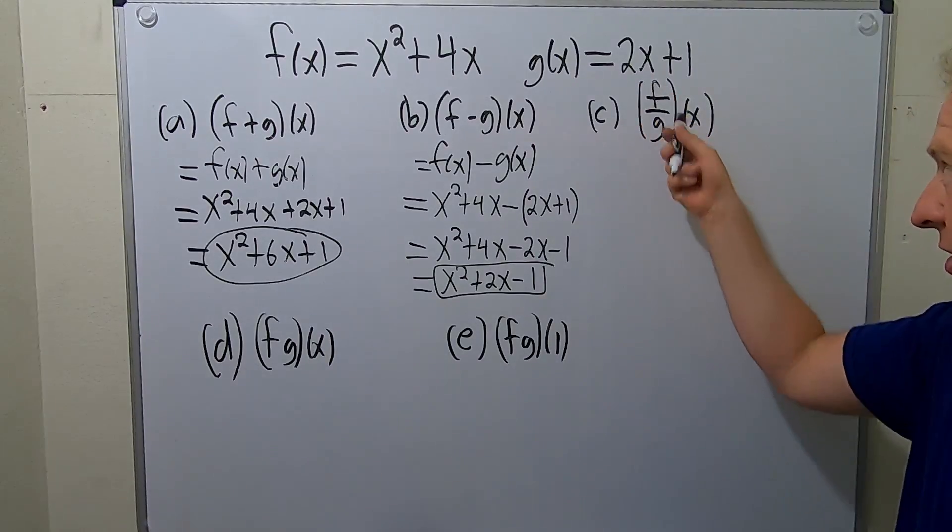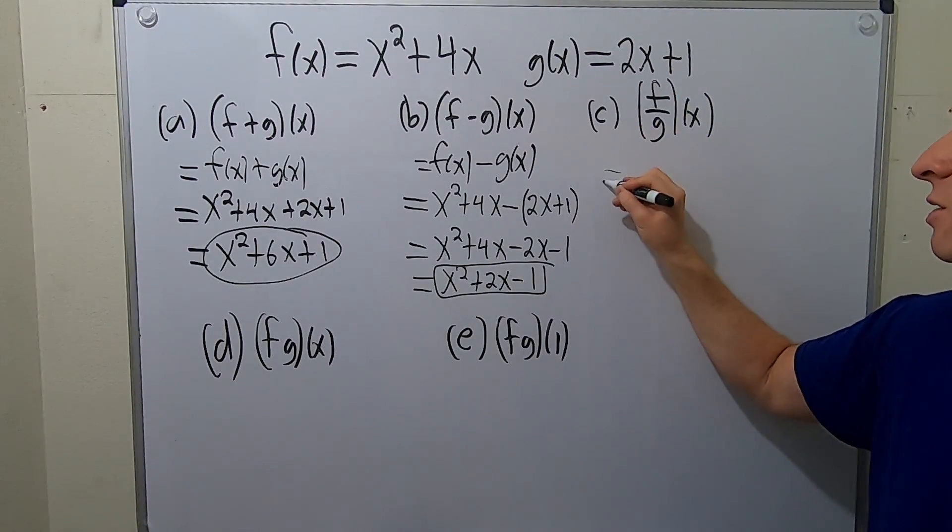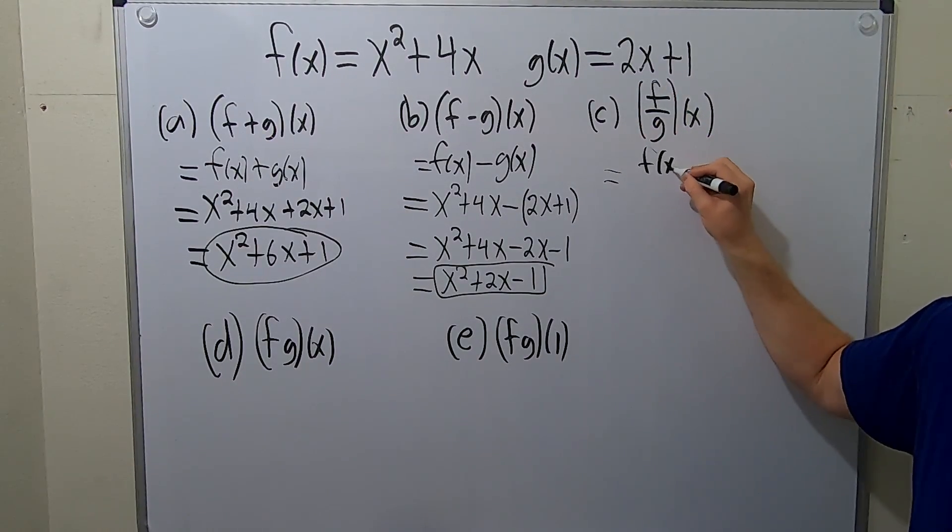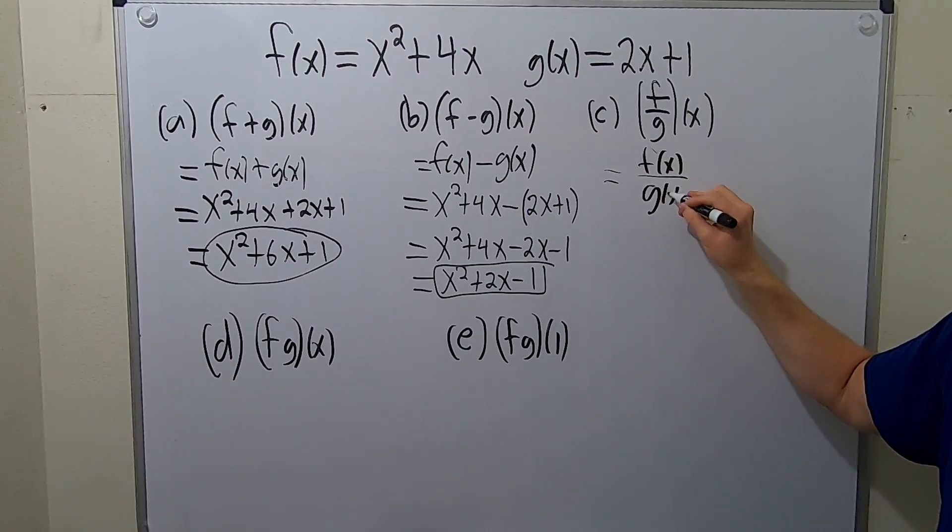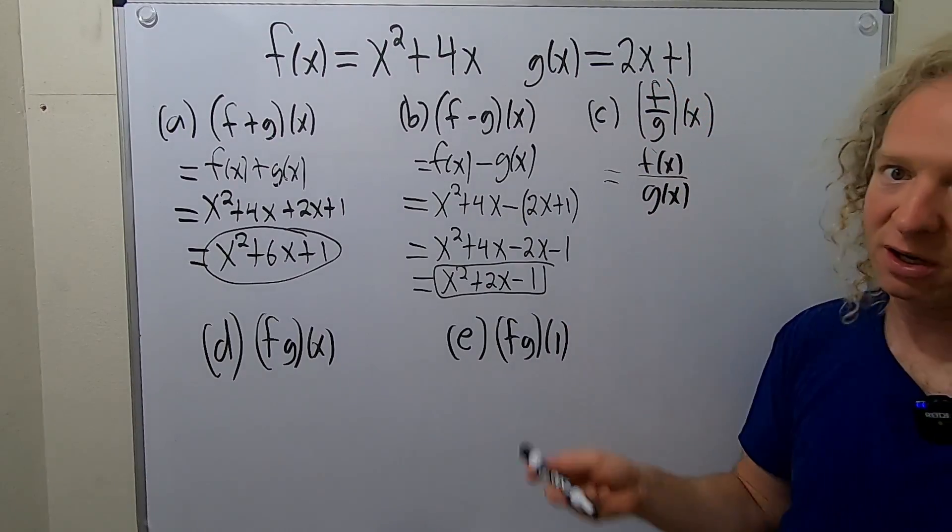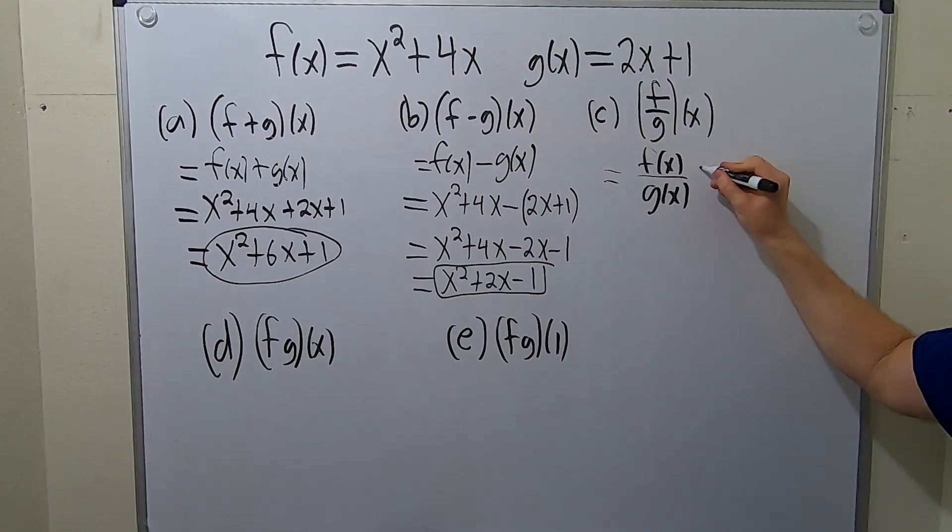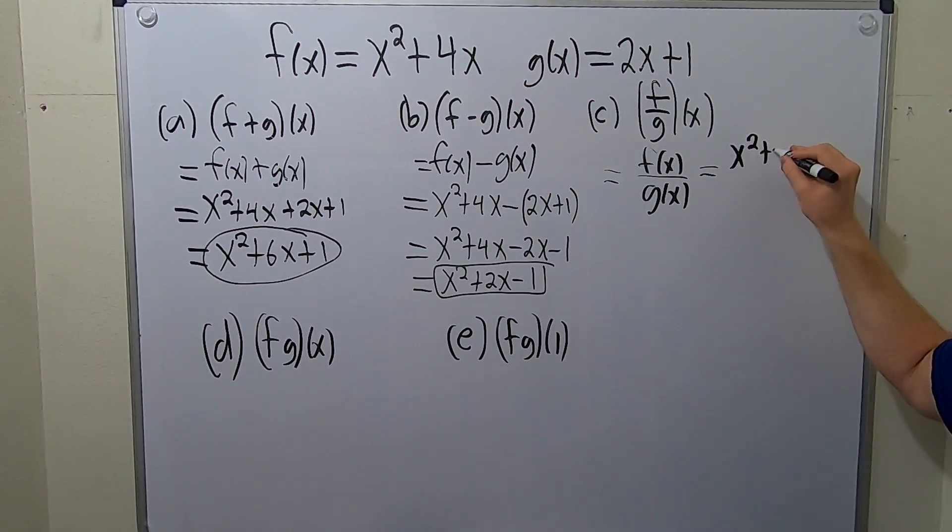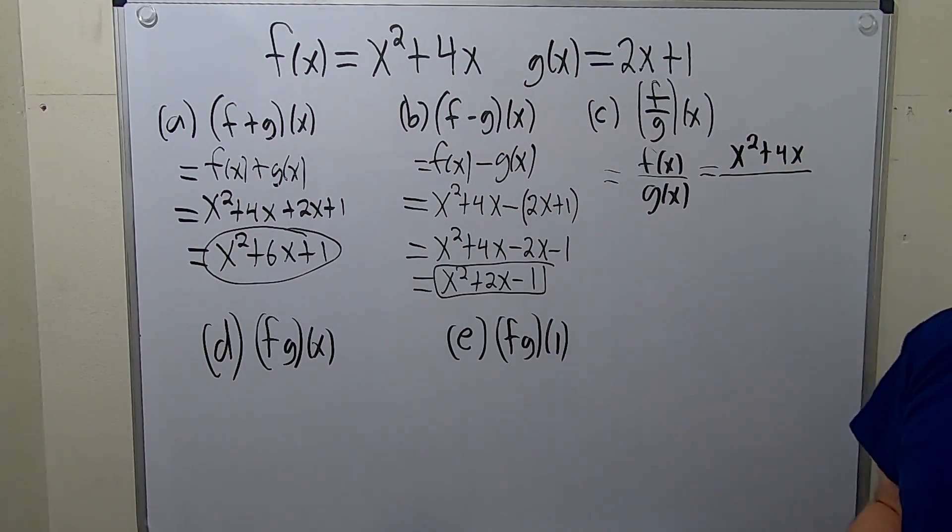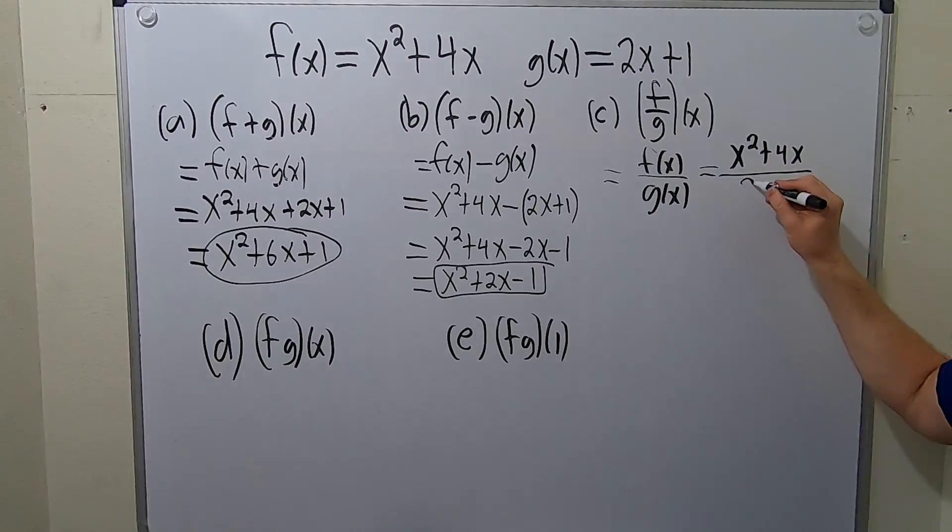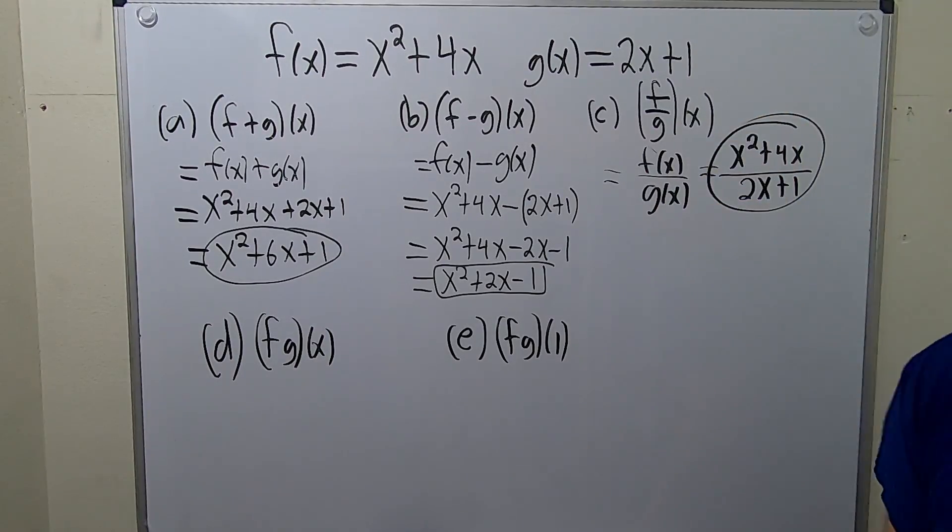This one's much easier. Same thing. Replace f with f and g with g. So this is f of x over g of x. f with f and g with g always works. And then now, just replace f with what it is. f is x squared plus 4x. So x squared plus 4x. And then g is 2x plus 1. So 2x plus 1. Very good. Awesome. Pretty easy.